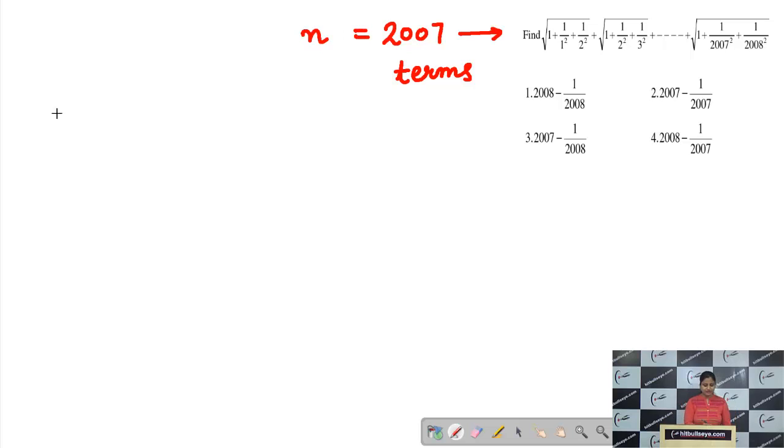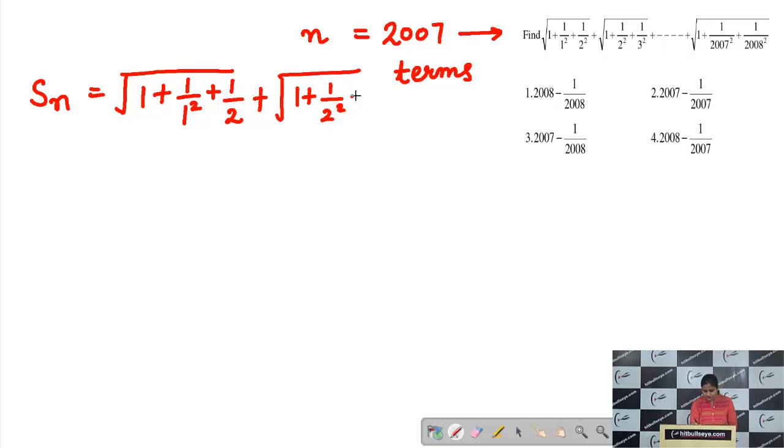So my question will become find the sum of N terms where first two terms are mentioned: 1 plus 1 upon 1 square plus 1 upon 2 square plus square root of 1 plus 1 upon 2 square plus 1 upon 3 square and so on. We want to find sum of N terms. Now by taking all the options.